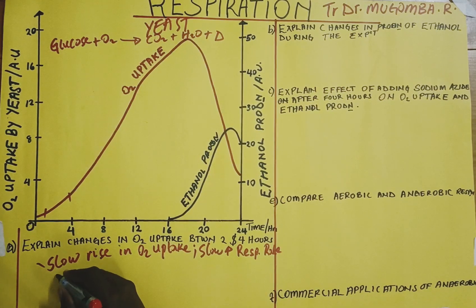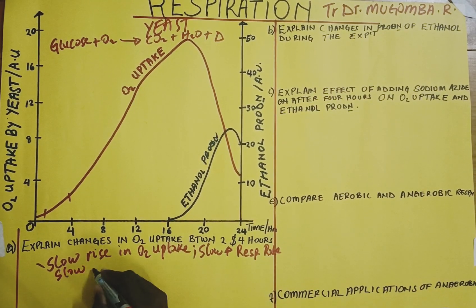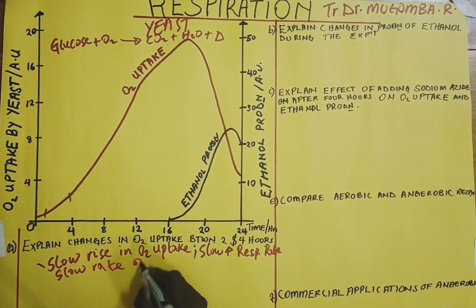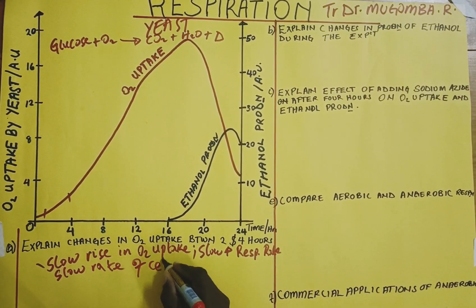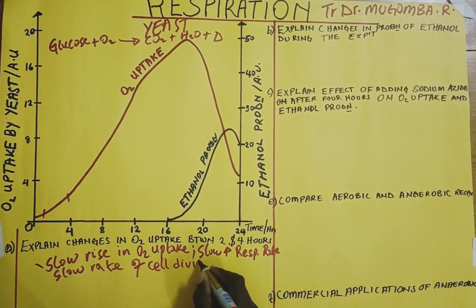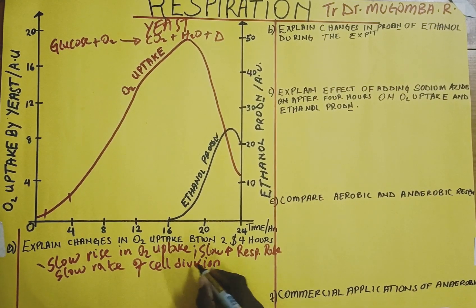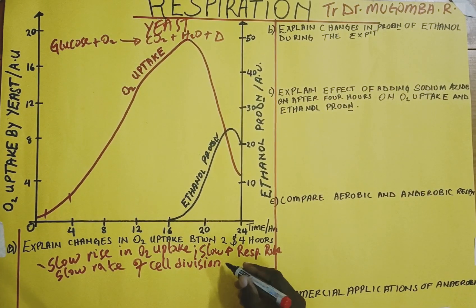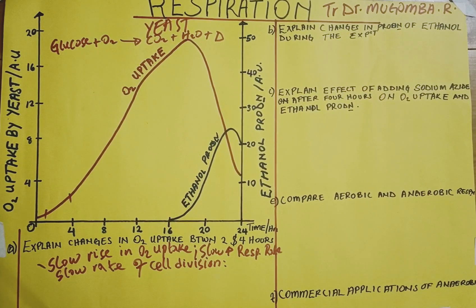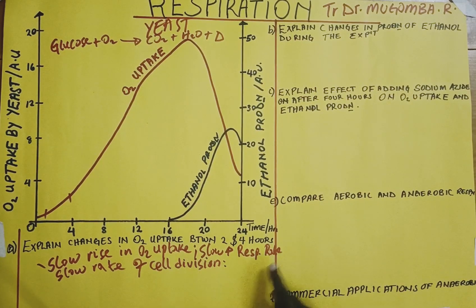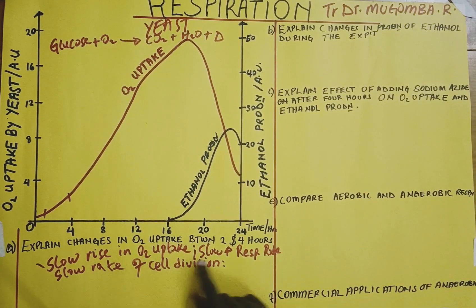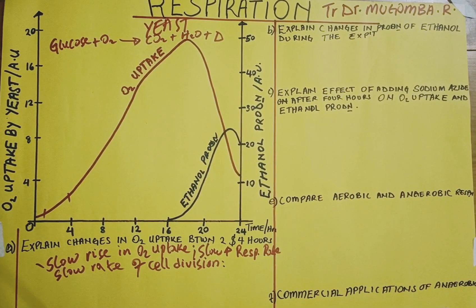The reason for the slow rise is that we still have a slow rate of cell division in the yeast cells. The yeast cells are still few in the yeast culture and there are few which are respiring. Since there are very few cells respiring, the rate of respiration is still slow, meaning oxygen uptake is also slow. The rate at which cell division was taking place was also slow.